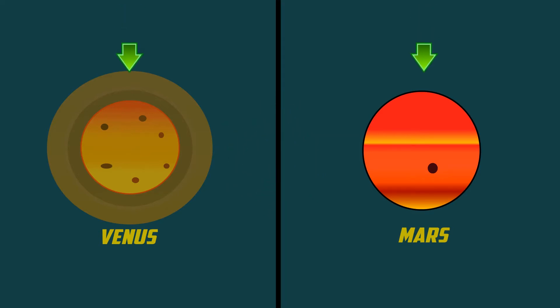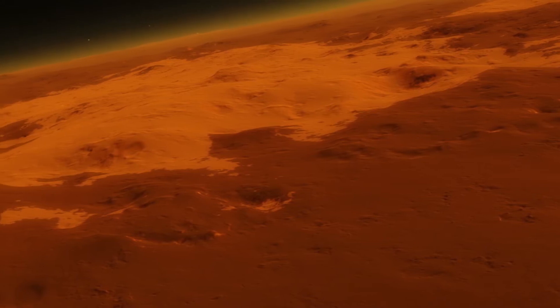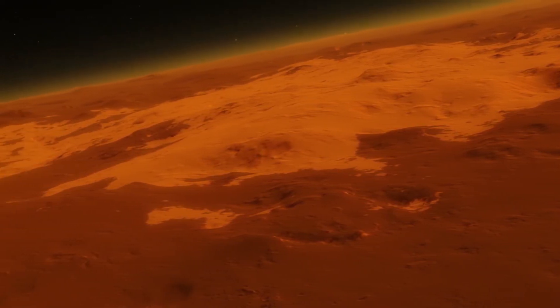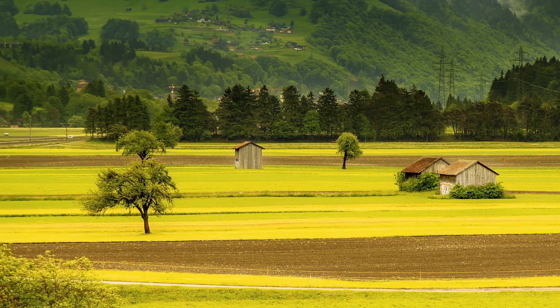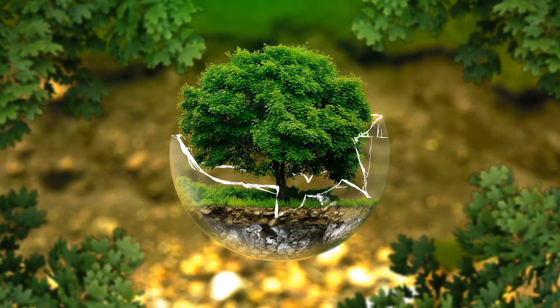Though these planets don't have habitable specifications, still there is a method called terraforming to make them habitable. Terraforming is the process of deliberately modifying a non-habitable planet into Earth-like habitable one by changing its atmosphere, temperature, topography and ecology.